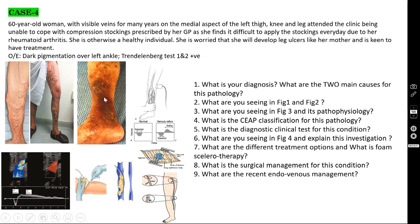This biperimalleolar area is called the gaiter area. The gold standard investigation for all vascular problems is the duplex scan — in this case a venous duplex scan.